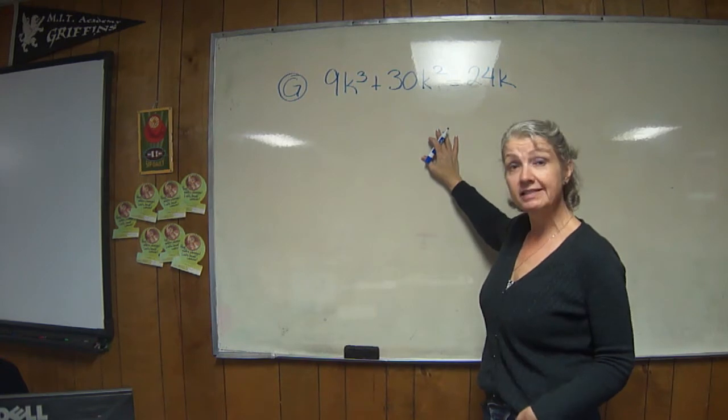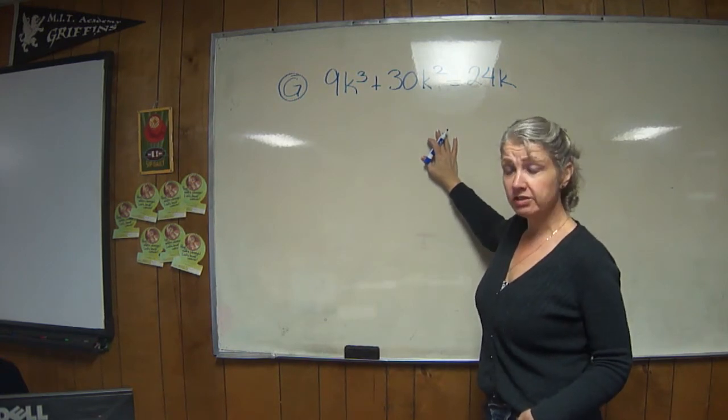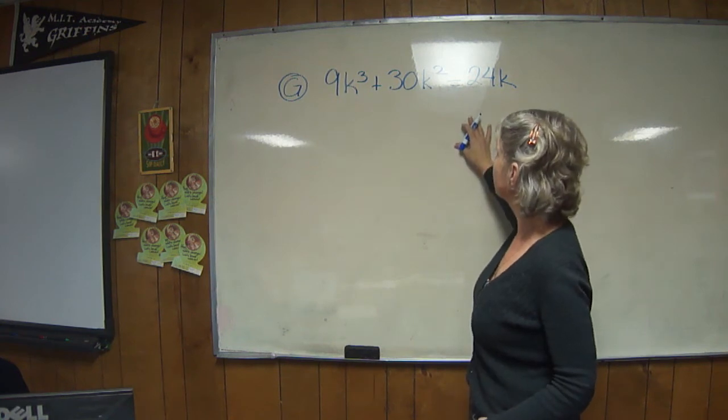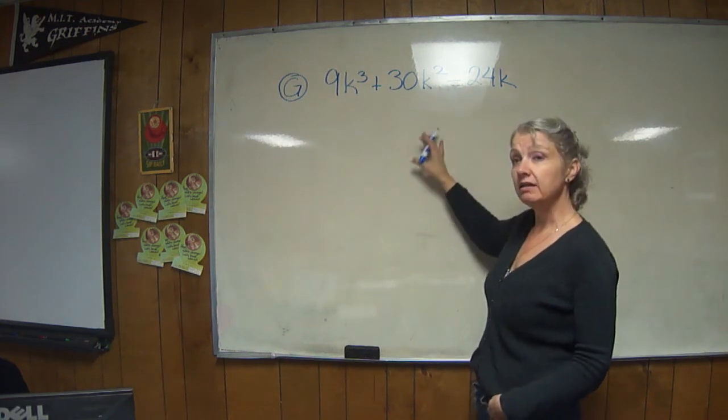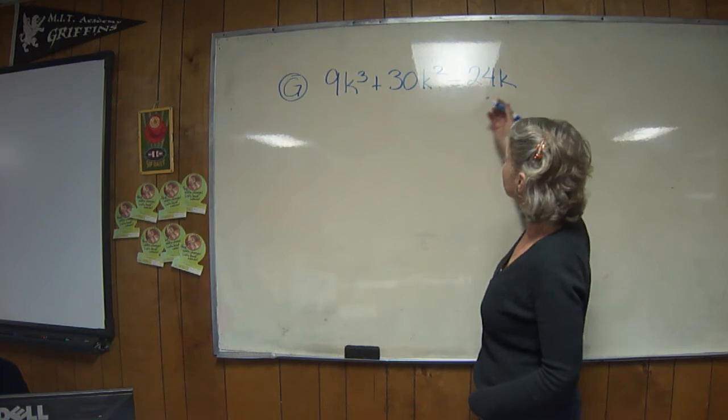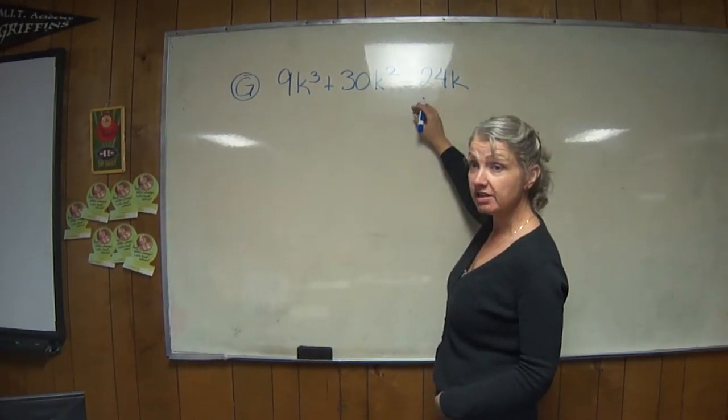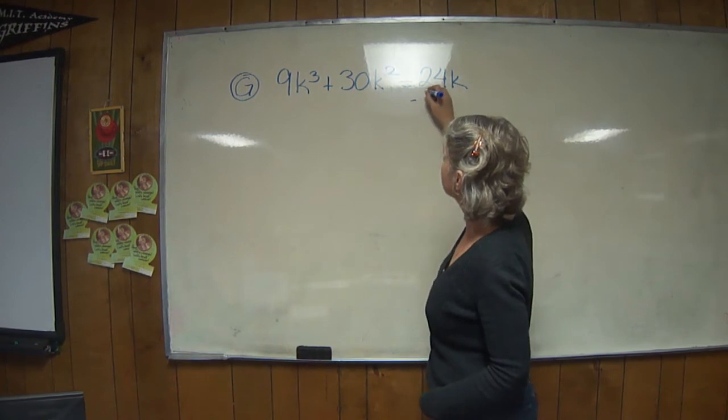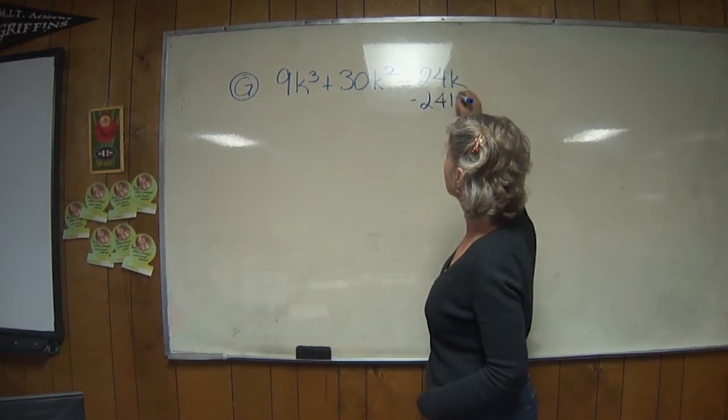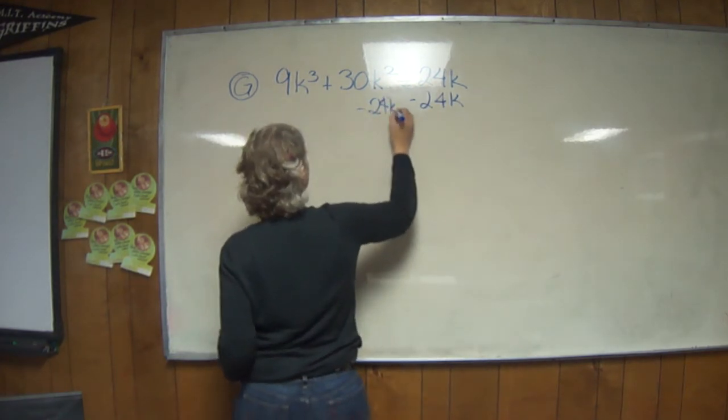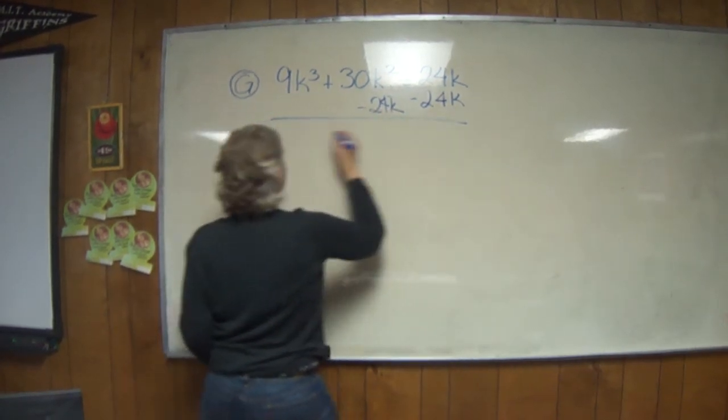So first thing we want to do is put it in declining order. We need to move 24k onto the other side. So the first thing we're going to do is add a negative 24k to both sides and rewrite the equation.